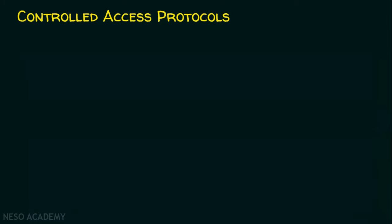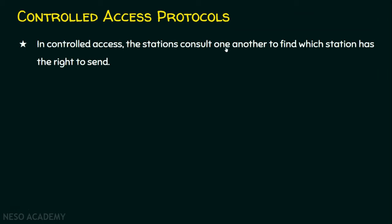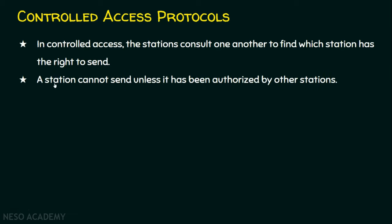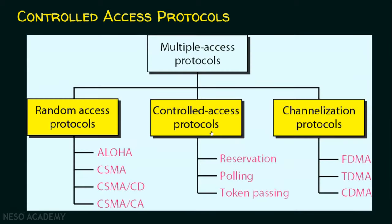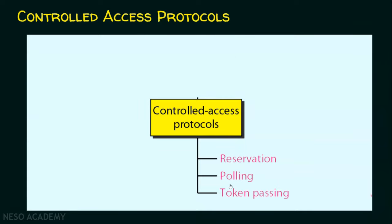The second type is the controlled access protocol. Unlike random access, where nobody controls the channel, in controlled access protocols the stations consult one another to find which station has the right to send. A station cannot send unless it has been authorized by other stations. Whoever gets the turn to send data is superior at that moment. The three methods under controlled access protocols are reservation, polling, and token passing, which will be elaborated in upcoming lectures.